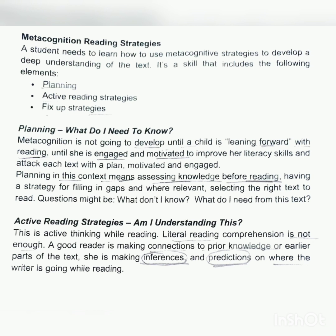The second element is active reading strategies — am I understanding this? Active reading means thinking while reading. Literal reading comprehension is not enough. There are four levels: literal level, inferential level, critical level, and creative level. At the literal level you know facts and factual knowledge, but here you have to go beyond literal knowledge.